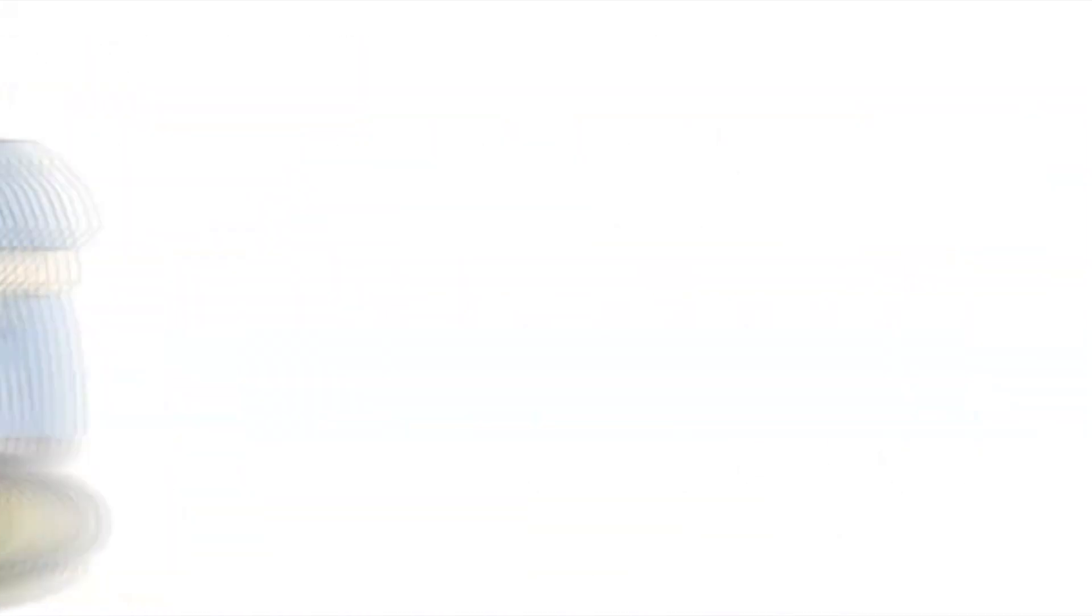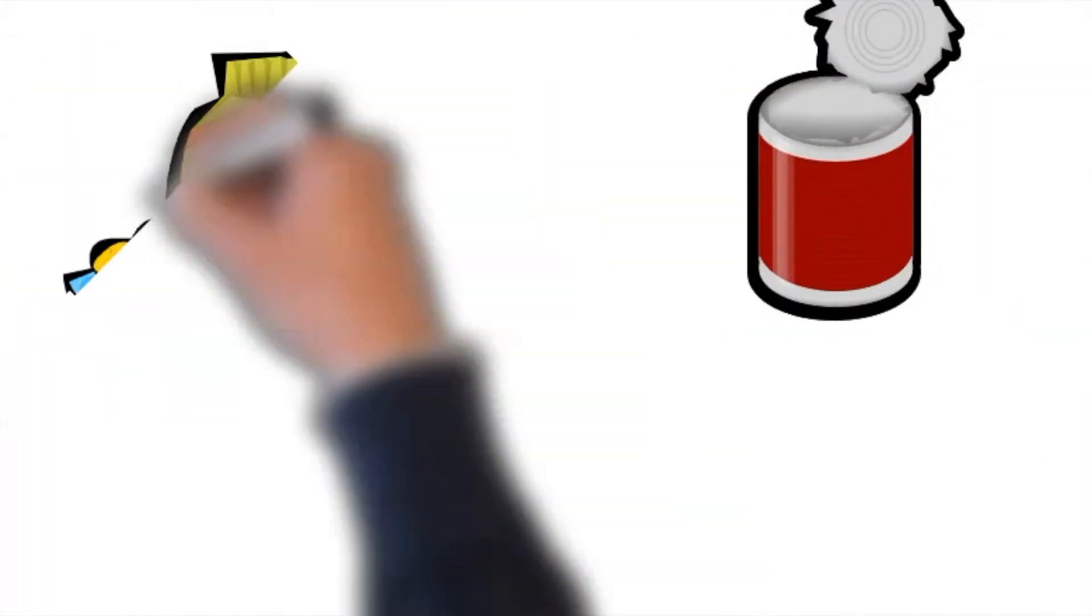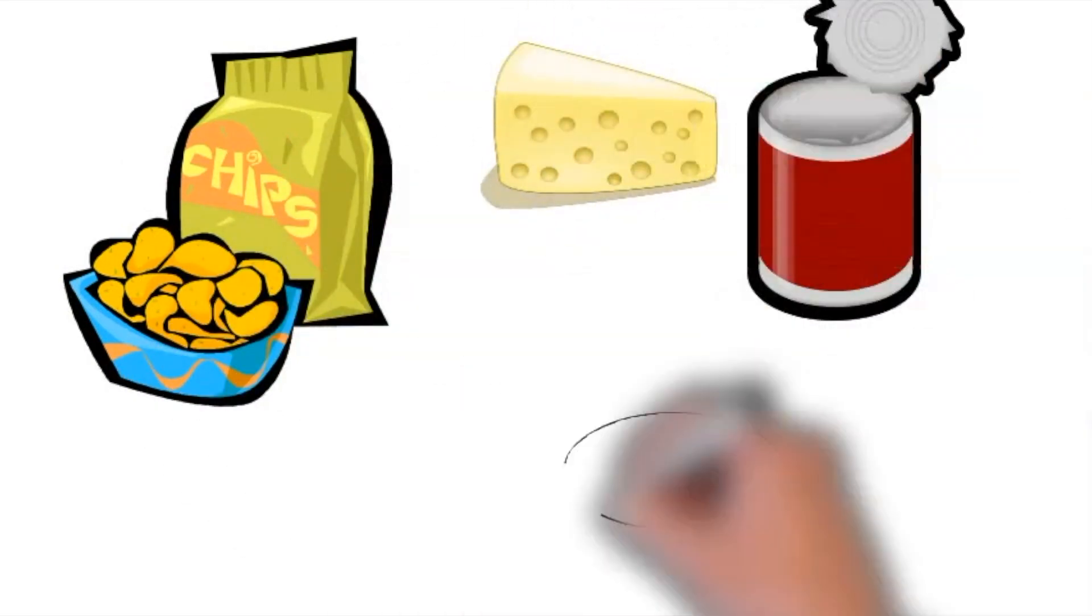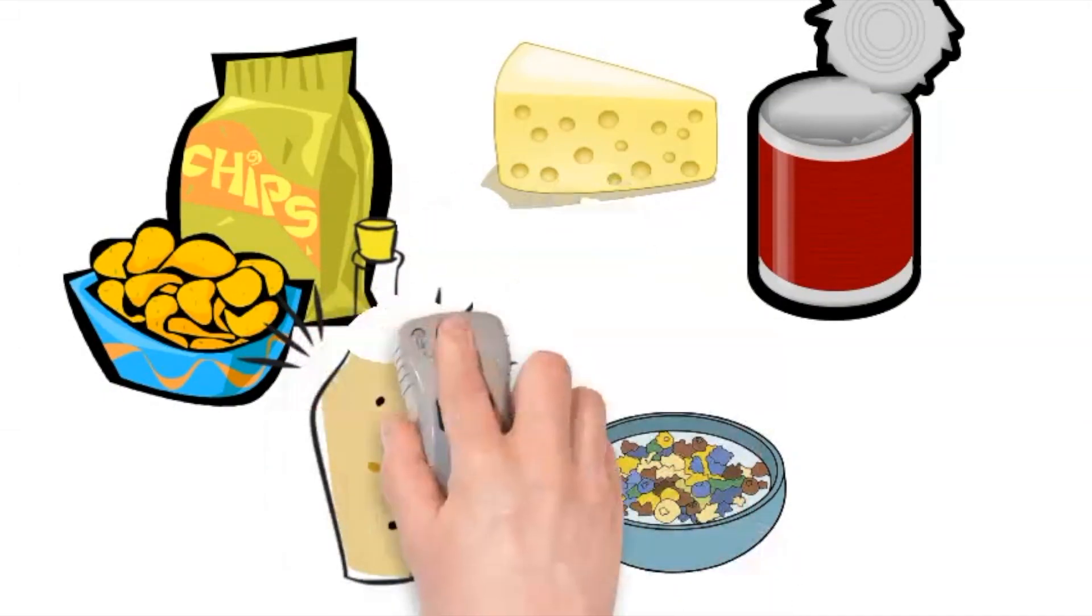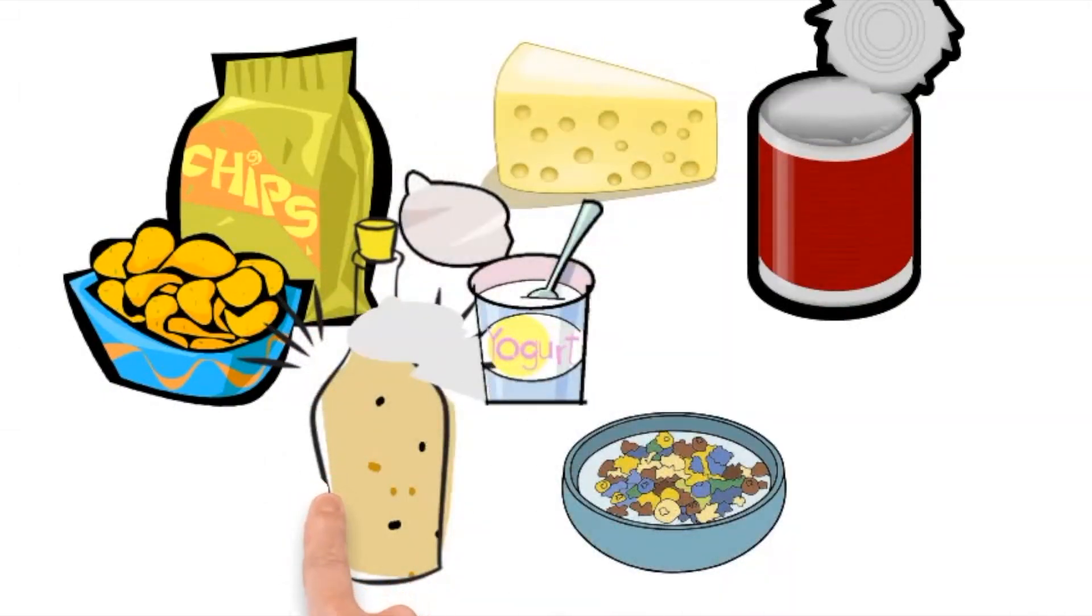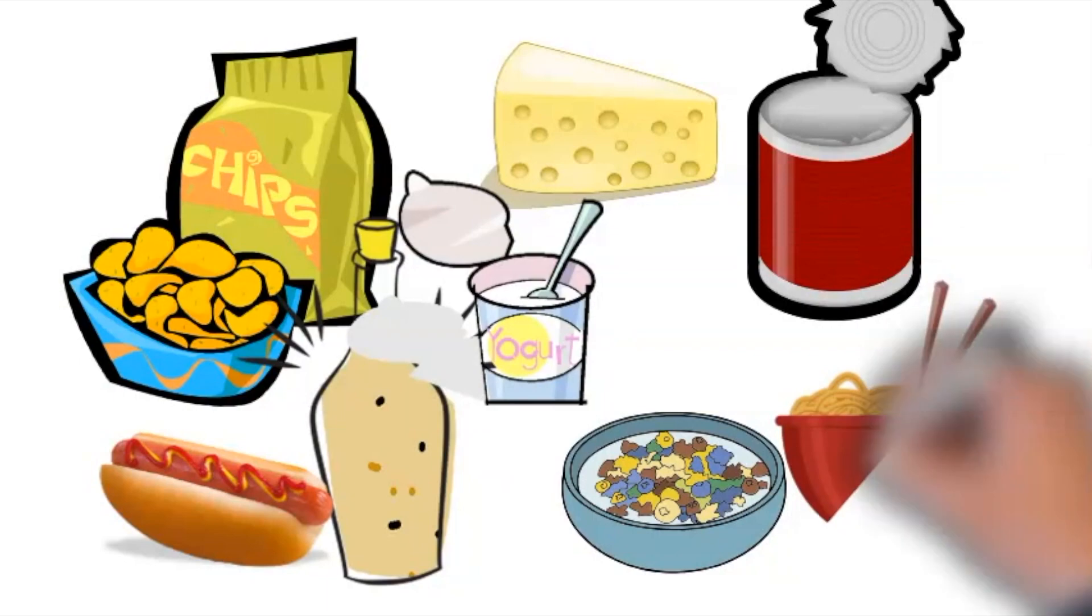They encompass a wide array of items including but not limited to canned soup, potato chips, certain types of cheese such as American, sweetened cereals, salad dressing, sweetened yogurt, processed meats like hot dogs and sausages, and instant noodles.